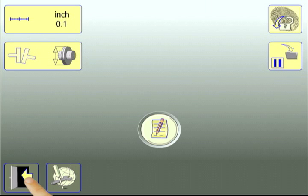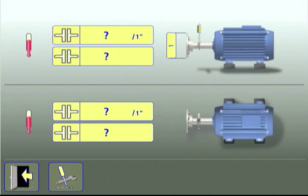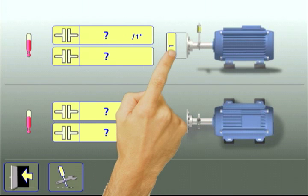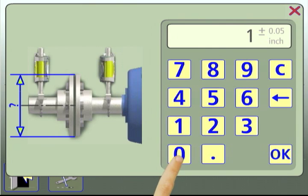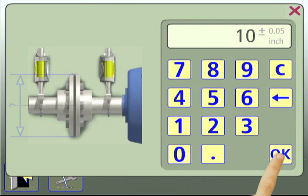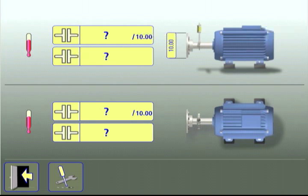Touch the exit icon to return to the angle and offset entry screen. Touch the yellow coupling diameter box. Enter the coupling diameter on the keypad and touch OK to return to the thermal growth values screen.